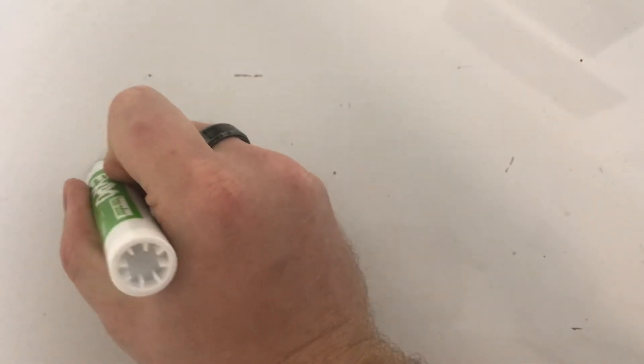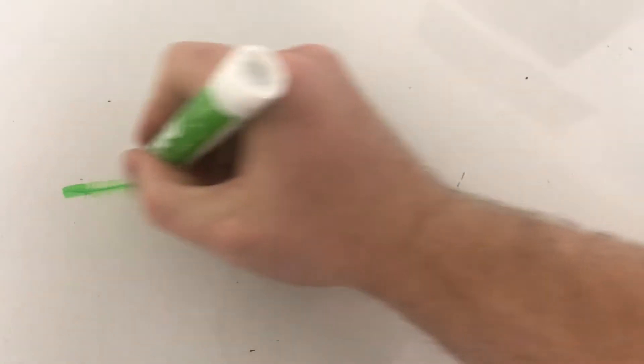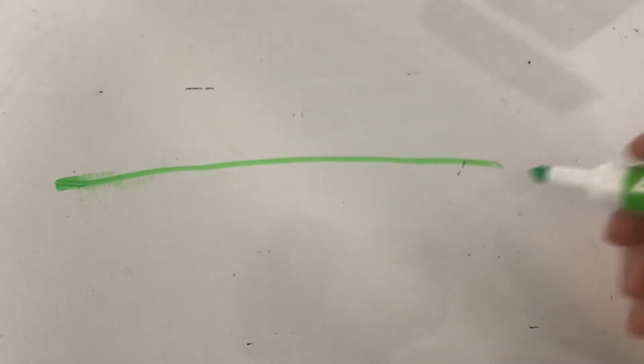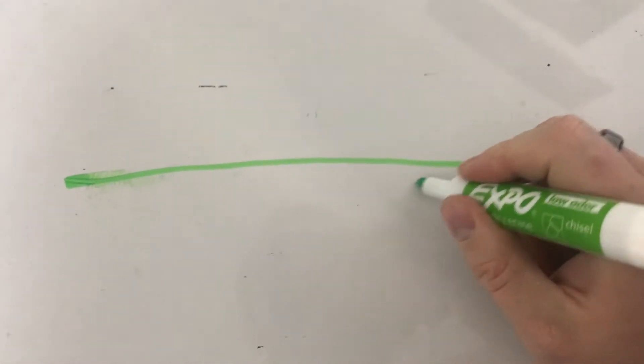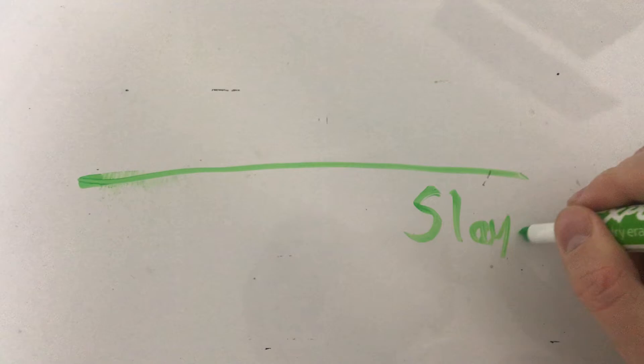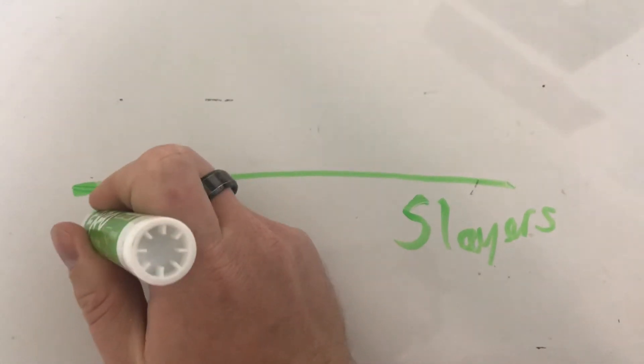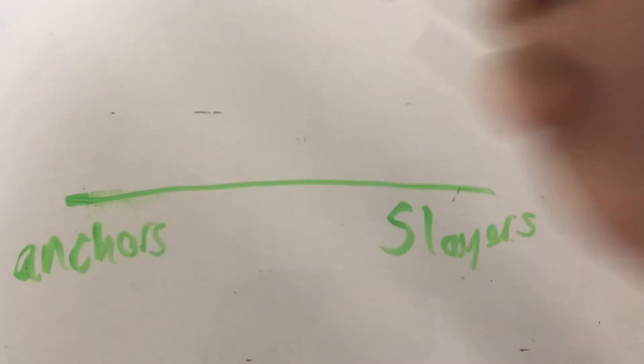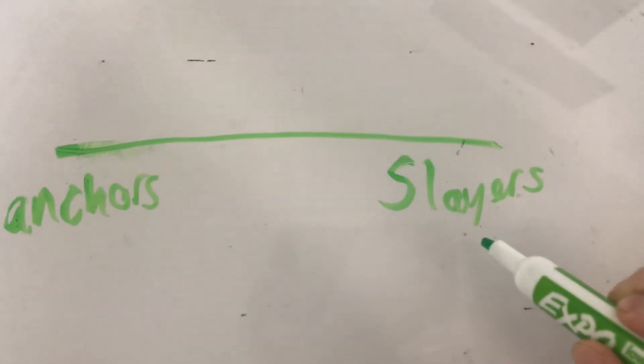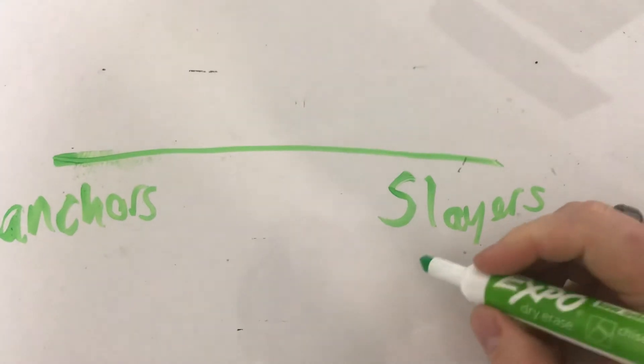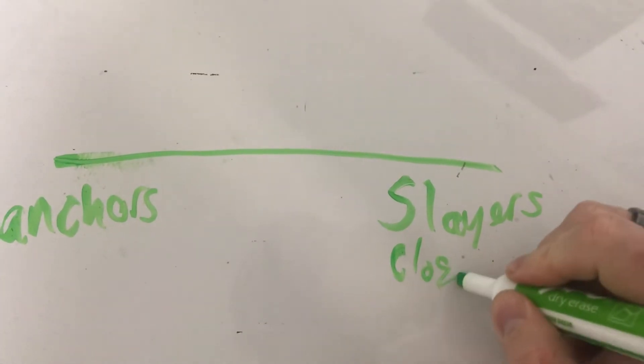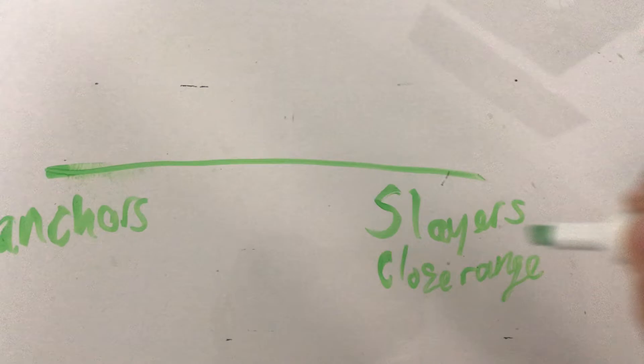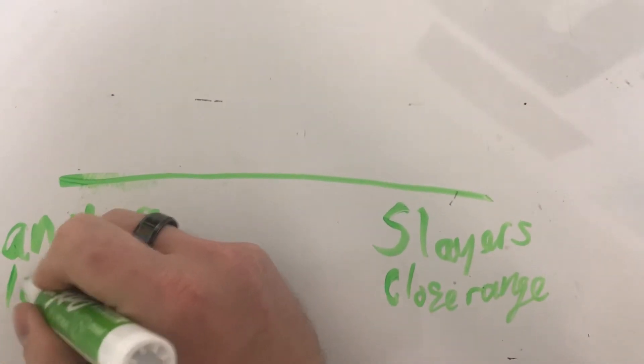So the first one, the first scale I had, oh gosh that was bad, first scale I had one end being the slayers and then one end being the anchors. And really what I mean by slayers over here is that this is close range, and then the anchors are really the long range.